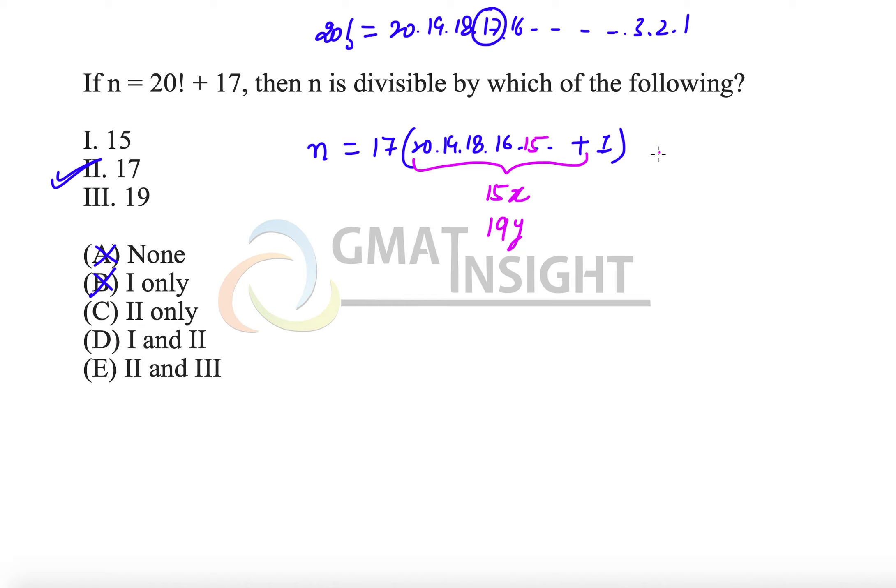And if we add 1 to them, that means 1 will always be the remainder when this entire number is divided by 15 or when it's divided by 19. Which means this entire number in brackets can never be divisible by 15 or 19 in this case, because the remainder will always be 1.